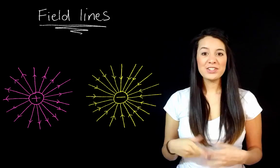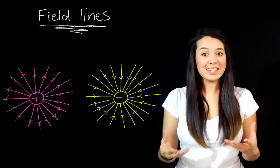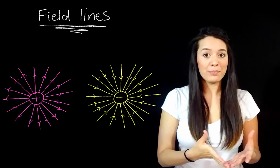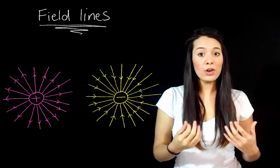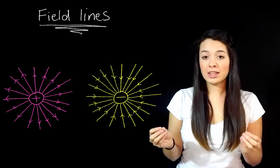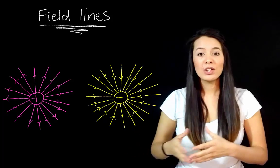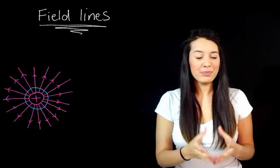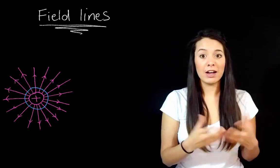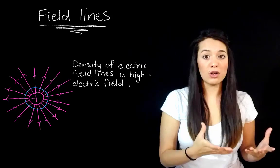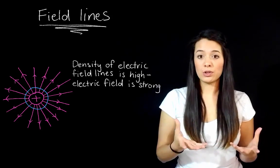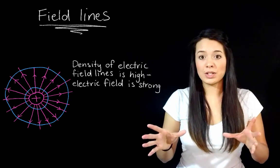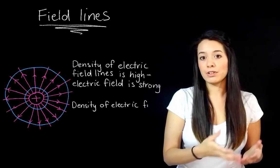I'm going to talk about the arrows a bit more in a sec, but for right now I just want to explain how field lines help us visualize the electric field strength of a charge. So where the lines are close together, or we can say the density of the lines is high, that's where the electric field is strong. So where the density of the lines is low or where the lines aren't so close together, that's where the electric field is weak.